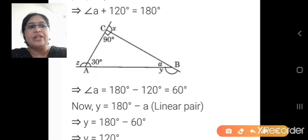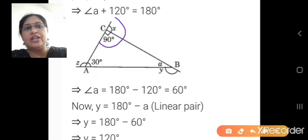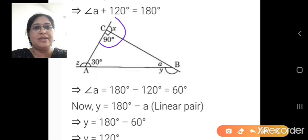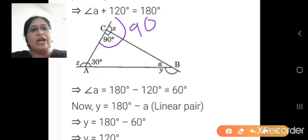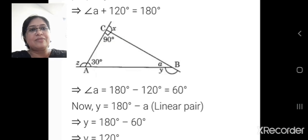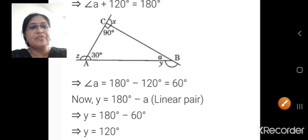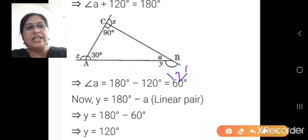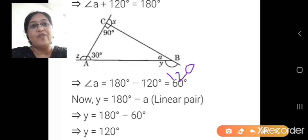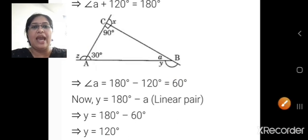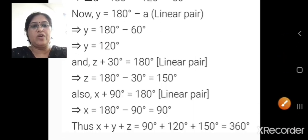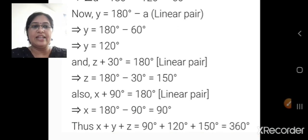Now, since x is on the side where 90 is given, the other side will also be 90 degrees — 90 plus 90 equals 180. So x is 90 degrees, y is 120 degrees, and z is 150 degrees. When you add x plus y plus z: 90 plus 120 plus 150 equals 360 degrees.